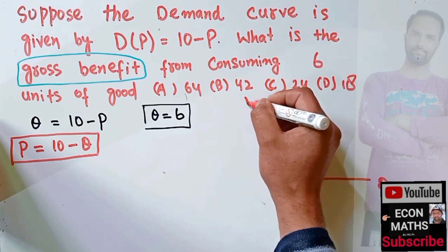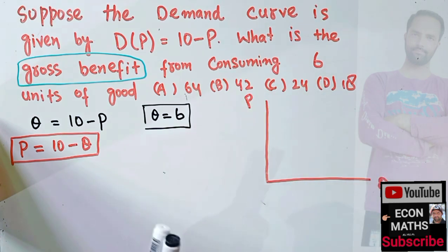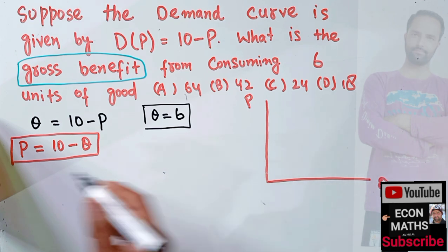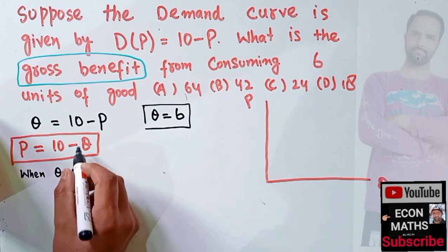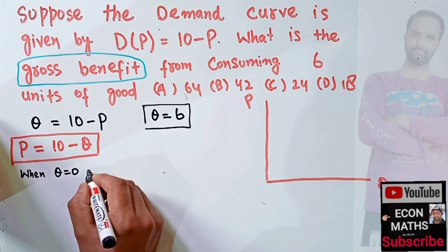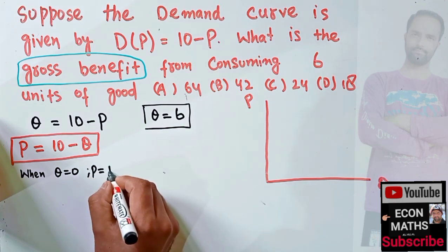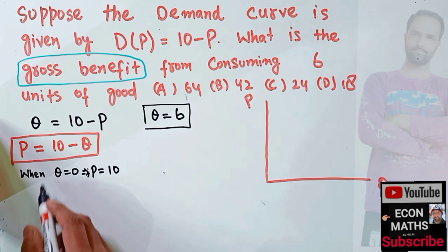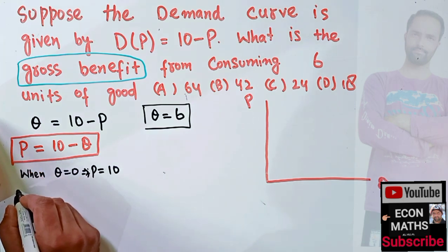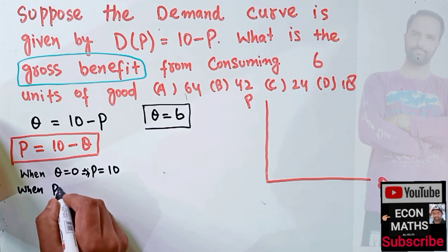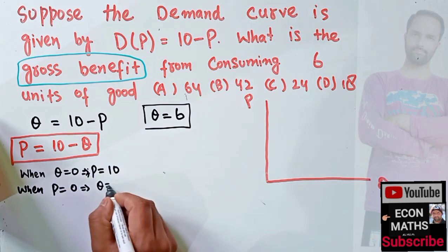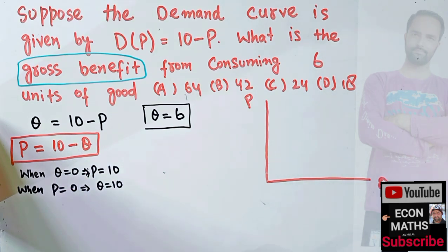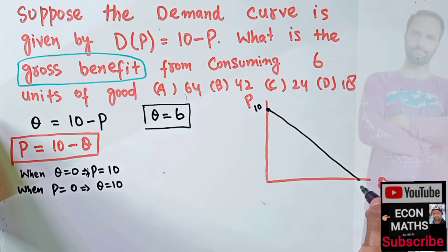We put quantity on the horizontal axis and price on the vertical axis. To graph it: when Q = 0, P = 10, and when P = 0, Q = 10. So we get the vertical and horizontal intercepts both at 10. This gives us our demand function with intercepts at 10 and 10.